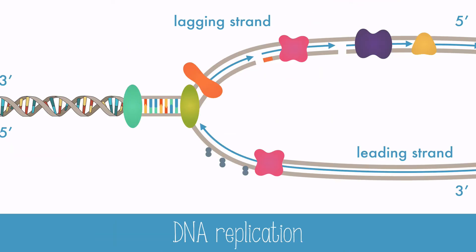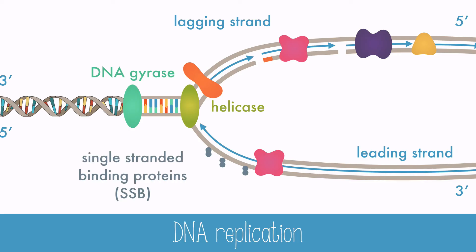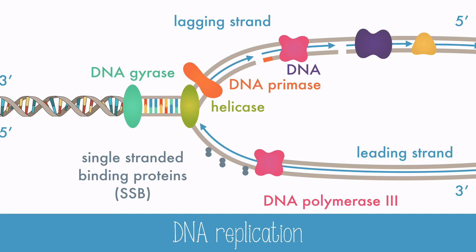In summary: DNA gyrase and helicase work to unwind and unzip the two strands of DNA. Single-stranded binding proteins keep the strands from re-annealing. DNA primase adds RNA primers so that DNA polymerase 3 can bind and join the free nucleotides. DNA polymerase 1 removes the RNA primer and replaces it with DNA. And DNA ligase joins the Okazaki fragments by covalent bonds.